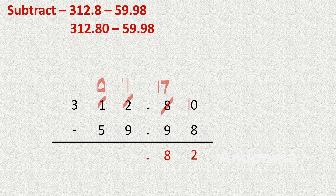The ones become 11. So 11 minus 9 equals 2. Now in the tens column, we have 0 minus 5, so we take a borrow from the hundreds — it becomes 2 and the tens become 10. So 10 minus 5 equals 5, and 2 remains as it is. So your answer is 252.82.